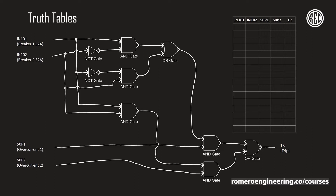For example, you may have a piece of logic that works perfectly during a specific set of conditions — such as normal or steady state conditions — but it may not work as intended during other conditions, maybe during abnormal conditions or during faults. This is the reason why developing a truth table of your logic is very, very important, so that you can be certain that you accounted for all the possible combinations of the inputs.